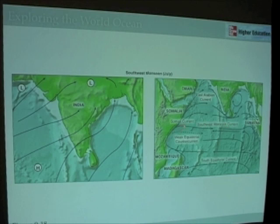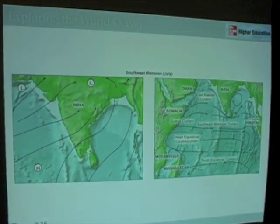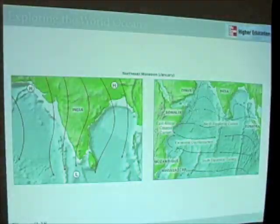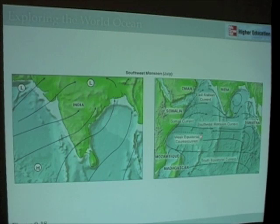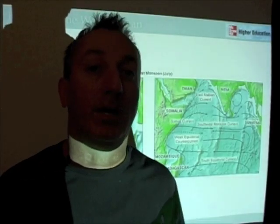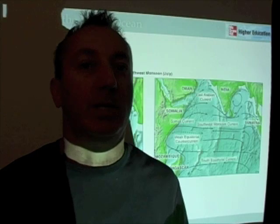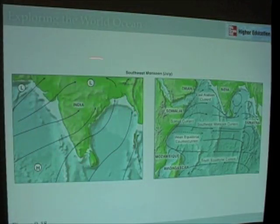In fact, this reversal causes the current to change its name — we now call it the southwest monsoon current. So if you look at figure 9-18 and compare the wintertime situation, with currents running from east to west, to the summertime situation, from west to east, you get some idea of the profound influence of this phenomenon over the North Indian Ocean. In the summertime when we have this situation, this is when they get torrential rains.